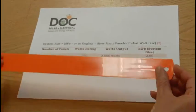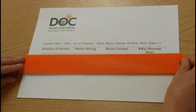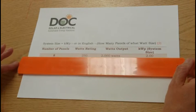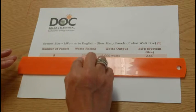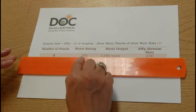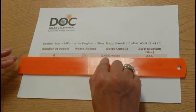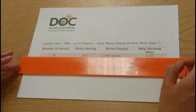Kilowatts peak, or in English, your system size tells you how many panels of what size. If you have, say, an 8-panel system, which is rated at 250 watts per panel, 8 times 250 will give you 2,000 watts, or 2 kilowatts peak.